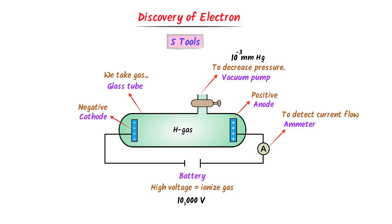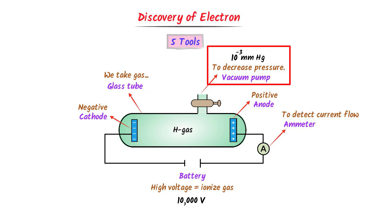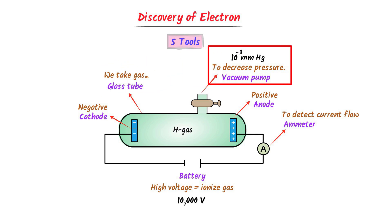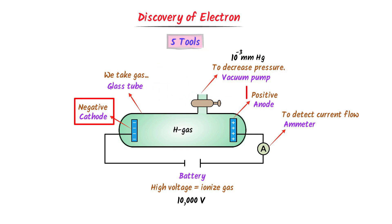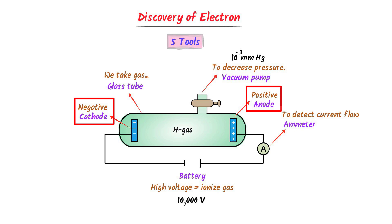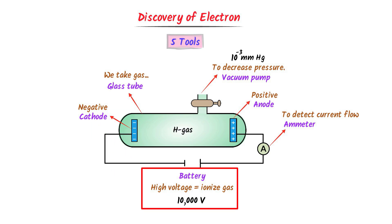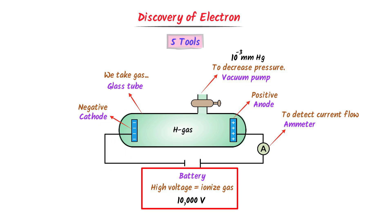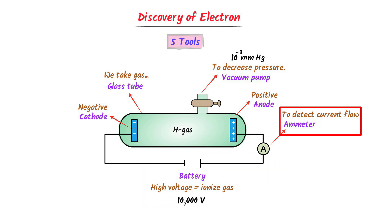To summarize: we take hydrogen gas in the glass tube. We decrease the pressure of the gas to 10 to the power negative 3 mm Hg using the vacuum pump. We use two metallic plates having negative charge and positive charge. We use the battery to provide high voltage like 10,000 volts. Finally, the ammeter will detect the flow of current.